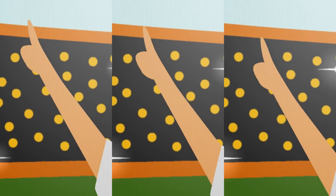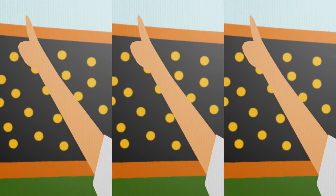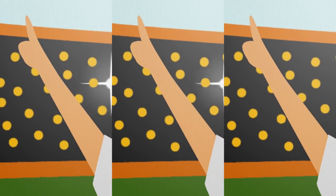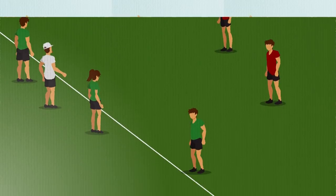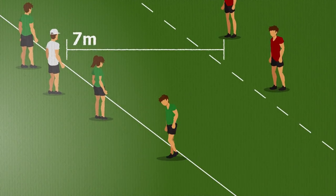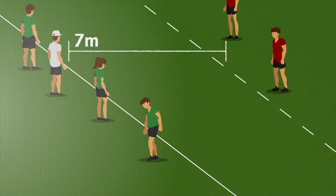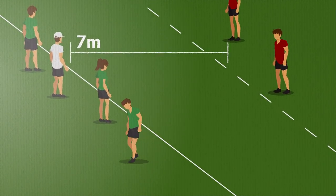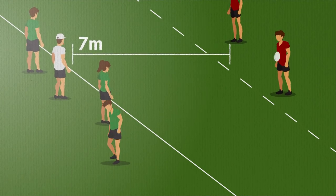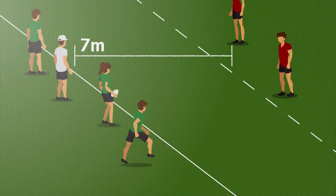Any three consecutive penalties from the defending team within the 7m zone will result in the last offending player being sent to the nearest sin bin area until the defending team regains possession.